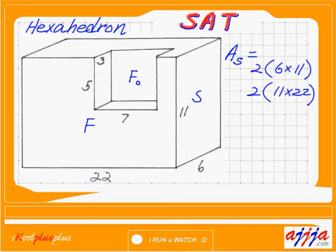This time I'm gonna do the top. I'm gonna call this one T zero. I bring this one up — that means the whole rectangle. This one right here is six, and this one is twenty-two. So six times twenty-two. But top and bottom are the same, so twice.